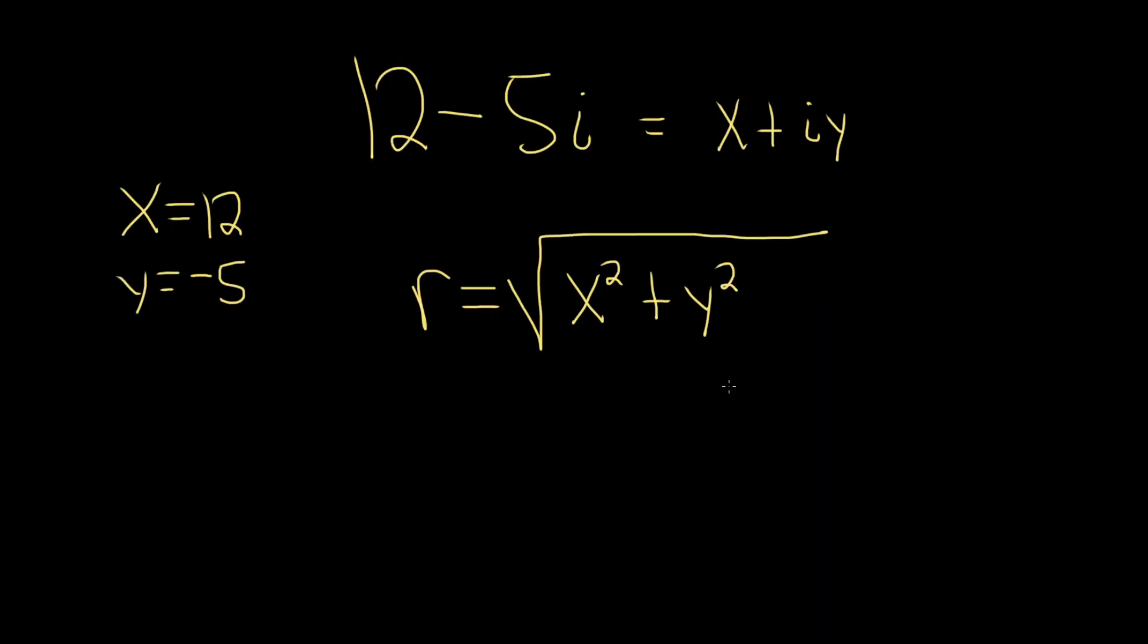So in this problem x is 12. This is equal to the square root of 12 squared plus negative 5 squared.